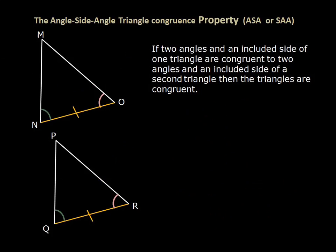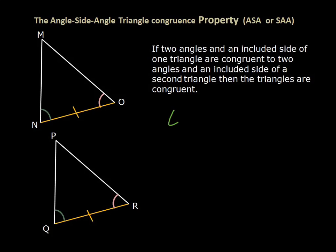Angle-Side-Angle says that if two angles and an included side of one triangle are congruent to the two angles and included side of a second triangle, then they're congruent. In this picture, the angles are on either side of the segment — the angles are sandwiching the segment. We write: angle N is congruent to angle Q, segment NO is congruent to segment QR, and angle O is congruent to angle R.